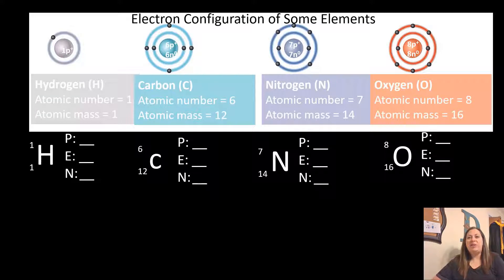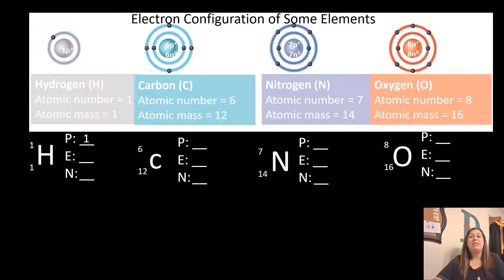Looking at electron configurations, we can draw them and use atomic number and atomic mass to determine the subatomic particles. Hydrogen (H) has an atomic number of one, so it has one proton. Since the atom is neutral, it also has one electron. Atomic mass is one minus one equals zero, so hydrogen has no neutrons. Carbon (C) has an atomic number of six — six protons, six electrons — and 12 minus 6 gives six neutrons. Nitrogen has atomic number seven: seven protons, seven electrons, and 14 minus 7 gives seven neutrons. Oxygen has atomic number eight: eight protons, eight electrons, and 16 minus 8 gives eight neutrons.